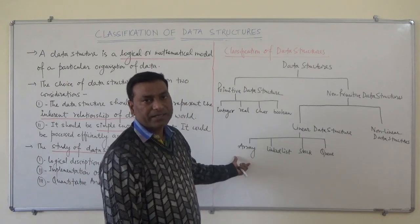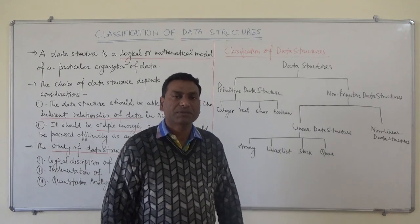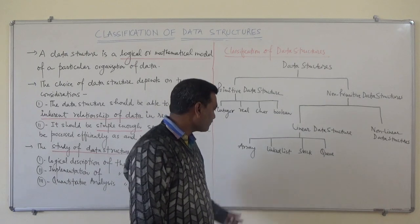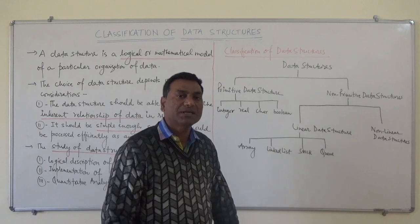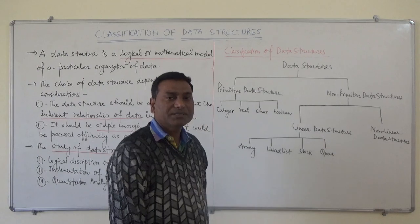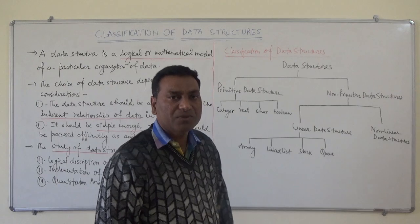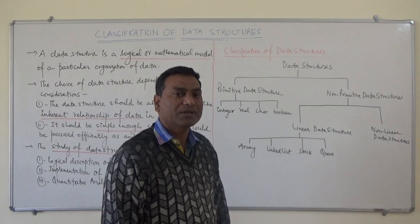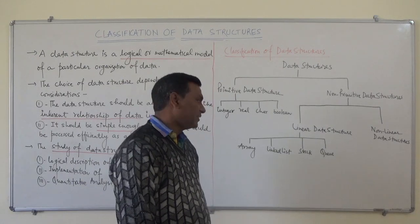Array can store similar types of data items and can be divided into various categories like single-dimensional and two-dimensional arrays. Linked list is also a linear data structure that can store elements and uses the concept of the pointer. In a linked list there is a concept of a node that has two parts: first is info and the second is a pointer variable, which we will study in subsequent videos.